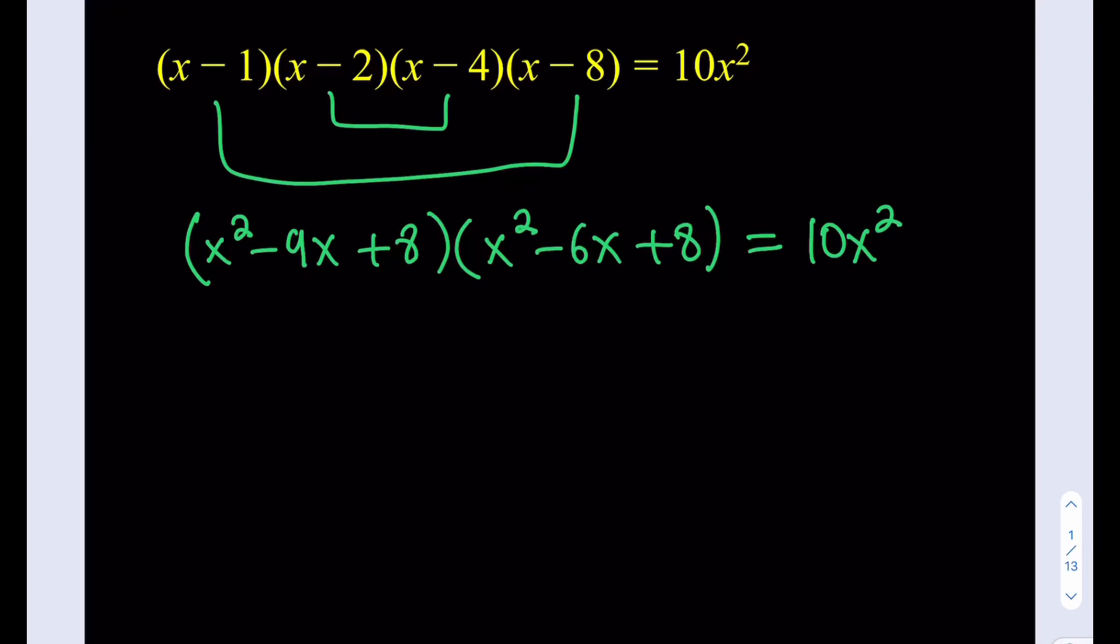So what I'm going to do now is I'm actually going to divide both sides by x squared, but I'm going to do it in a smart way. So let's go ahead and divide this by x squared. And instead of dividing the whole thing by x squared, I'm going to divide each of these factors by x, which will be equivalent to the right-hand side.